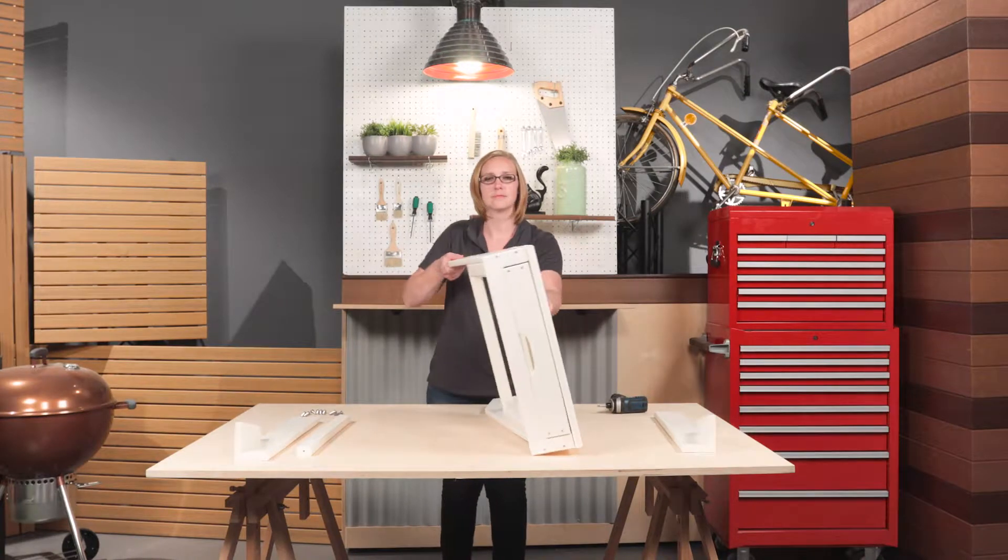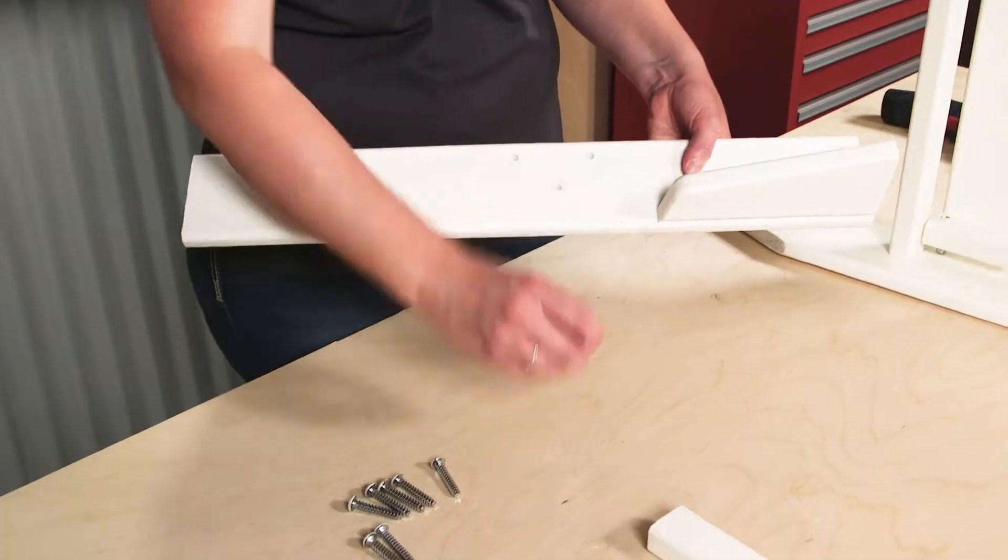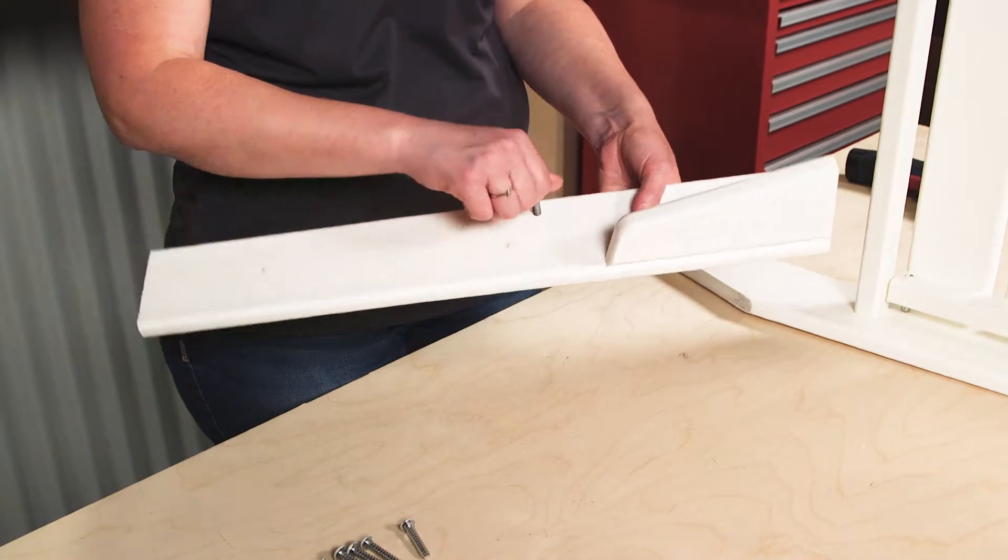Next, attach the front legs to the seat assembly using three 1.5-inch flat-tipped screws for each leg.